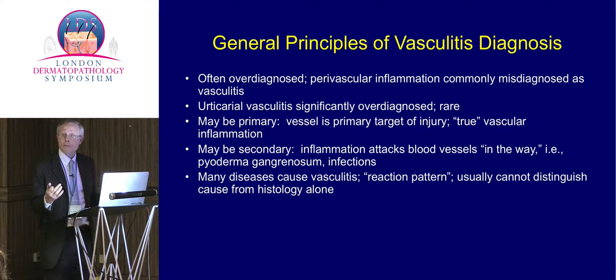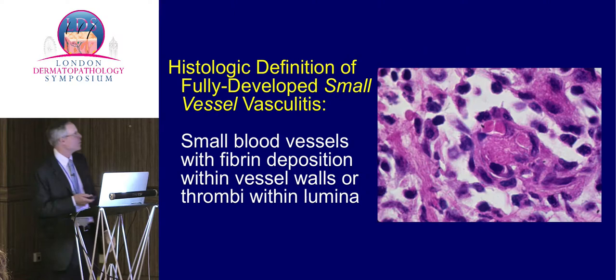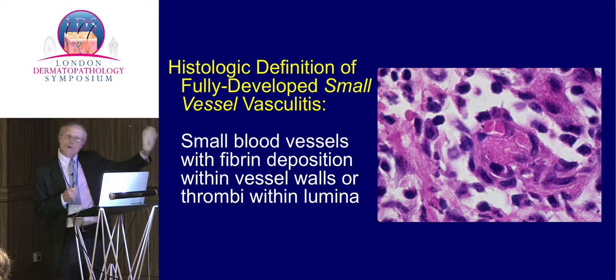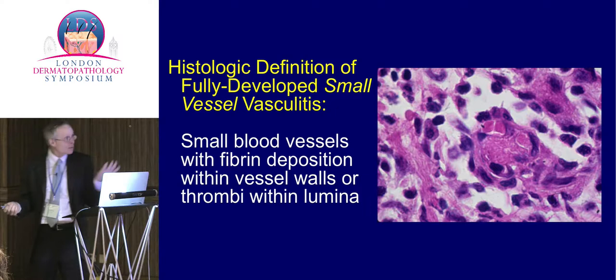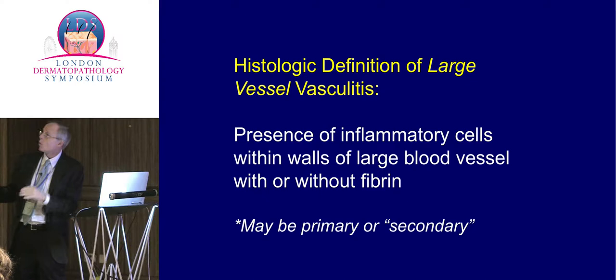Vasculitis may be primary or secondary. In larger blood vessels, if there's inflammation at all it's abnormal. A lot of diseases cause vasculitis — if a rheumatologist calls with leukocytoclastic vasculitis and asks the cause, the answer is you don't know without looking at the patient, because it's an end-stage reaction of many different things that causes immune complex deposition. The histologic definition of fully developed small vessel vasculitis is fibrin deposition within the walls or thrombosis within the lumina. Without that, you can't call it a fully developed lesion. For larger blood vessels, just inflammation is all you need.